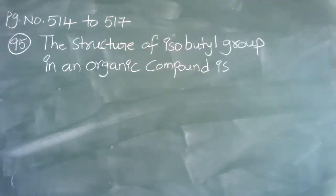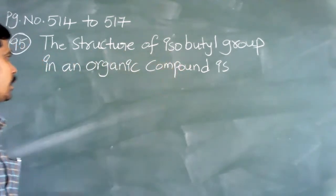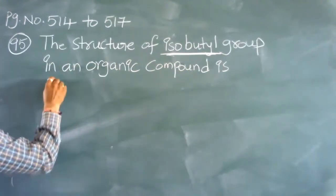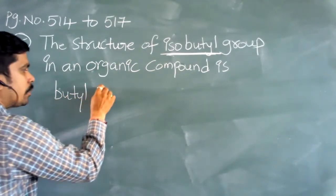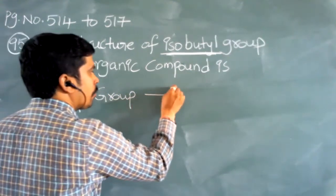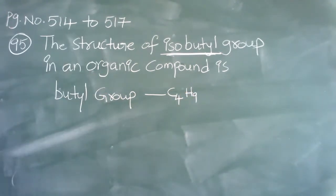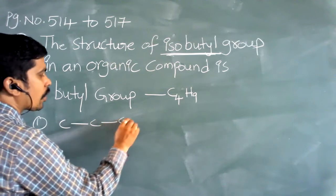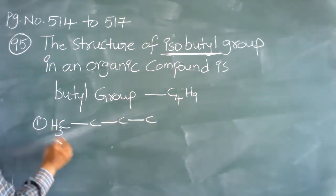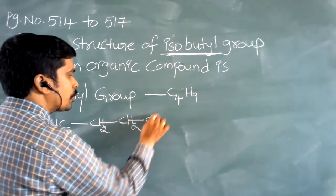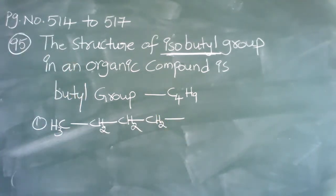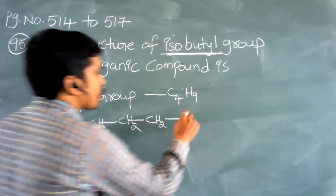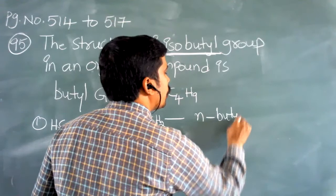Next, question number 95: the structure of the isobutyl group in an organic compound is? The formula of a butyl group is –C4H9, and it can be represented in four different ways. The first is normal butyl, where all four carbons are in a straight line: CH3–CH2–CH2–CH2–, giving the formula –C4H9 with all carbons in a straight chain.